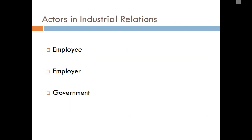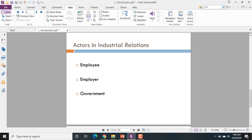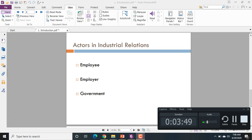Who are the major actors or participants in industrial relations? They are the employee, the employer, and the government. We have already discussed the employee and the employer. The government mainly regulates the relationship between the employee and the employer, and as a result, the government is an actor and participant in industrial relations.